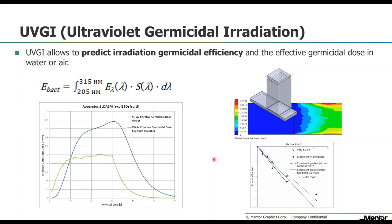For those of you working with UV LEDs or UV irradiation for UVGI — ultraviolet germicidal irradiation — you can analyze the irradiation or effective germicidal dose. In this case, flow comes in from the left side, leaves the right side, and you have UV lights above. You can see over time, as the liquid moves through, how it is irradiated by the UV light and how efficient or effective that irradiation was.